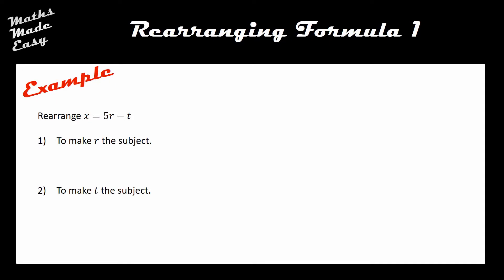So let's have a look at how we do this one. I've given you the formula X equals 5R minus T, and there are two different questions. The first one, I need to make R the subject, and the second one, I need to make T the subject. The subject is currently X, because it's X equals and then everything else that follows. So for question one we need to end up with R equals some formula, and for question two, T equals some formula. We're going to use the same rules as when we solved equations. So starting with X equals 5R minus T.